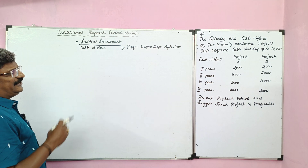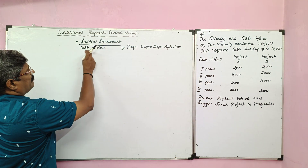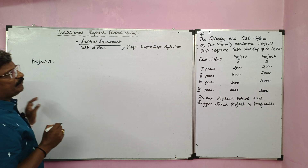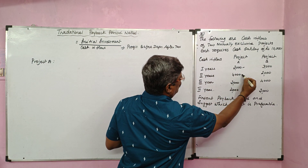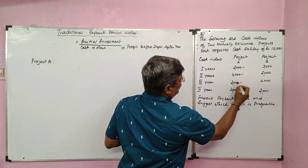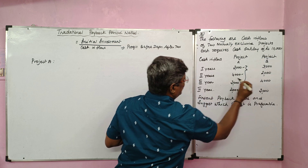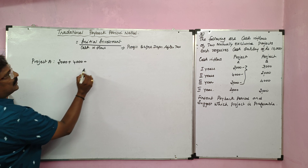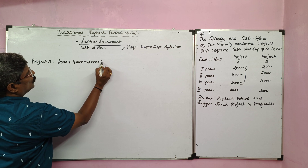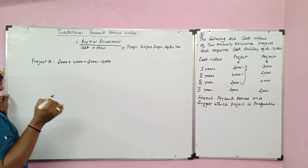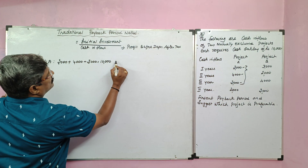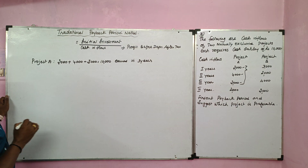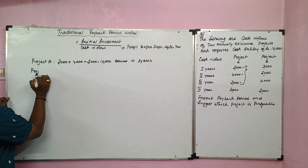Project A payback period. The formula: initial investment divided by cash inflow. Project A: first year profit 3,000, second year 4,000, third year 3,000 — total 10,000. So the initial investment of 10,000 is fully recovered in three years. Project A's payback period is 3 years.